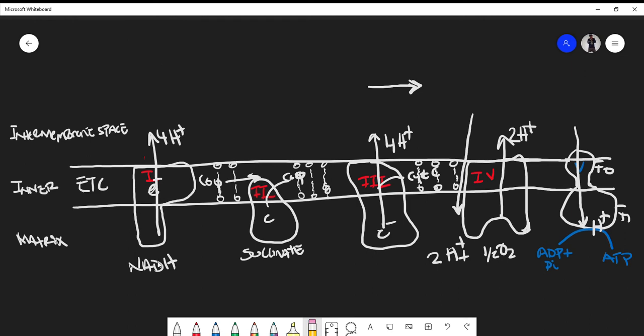Essentially we have a buildup of H+ ions in the intermembrane space. Again, the details are not important - Complex I gives us about four H+ ions.